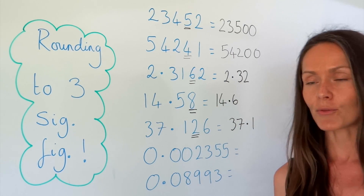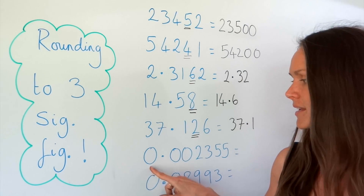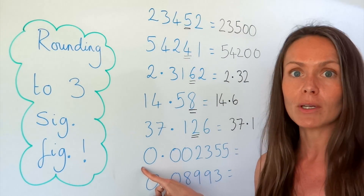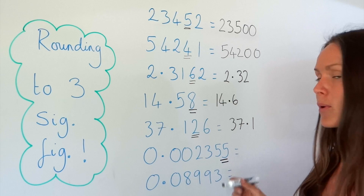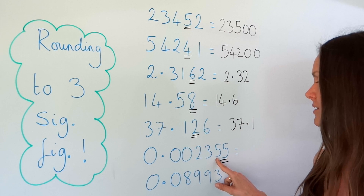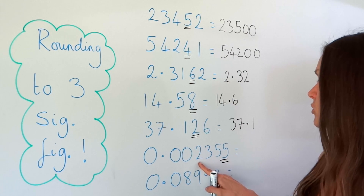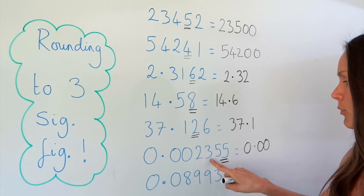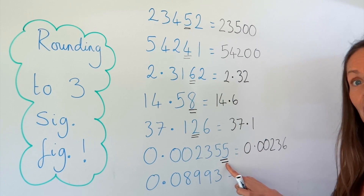Now this one is a little bit different, because normally we start counting from the first digit. But when the zeros are at the front like this, they don't count as real figures. So we start counting from the first real figure. We count one, two, three, and we check the fourth one to see if it rounds the third one up. Because it's the number five, it rounds this number up to six. Everything else stays the same — remember, we're just rounding it. We're not changing the number to 236; it's still the same number. So it's 0.00236. Because it's after the decimal, we don't need to add another zero at the end.